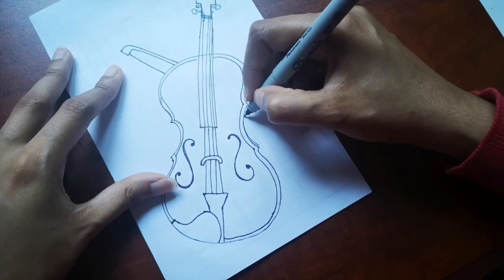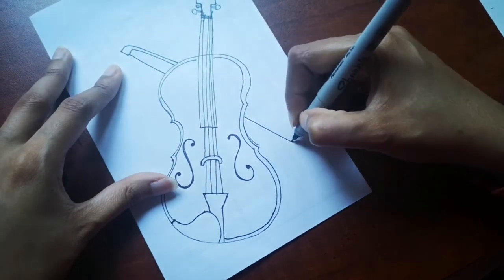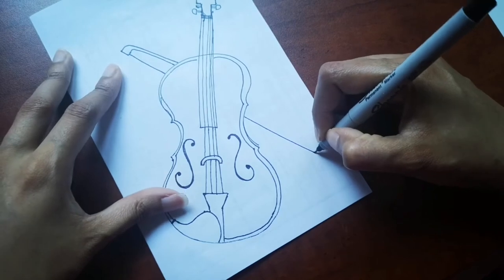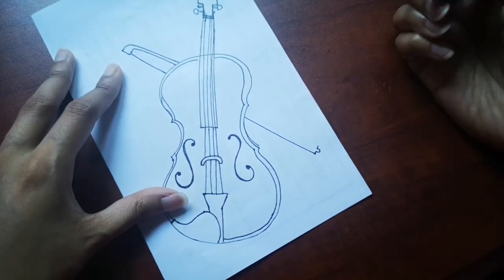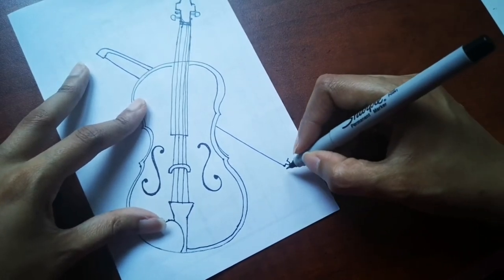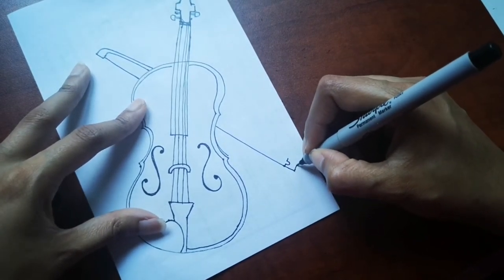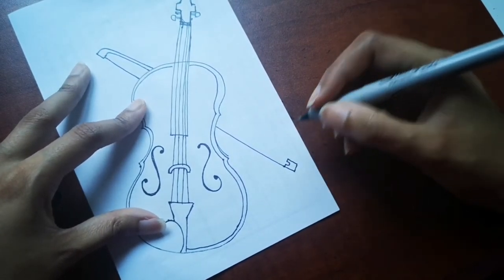So we have to draw the bow. And the violin is the smallest and highest pitched string instrument, typically used in Western music.